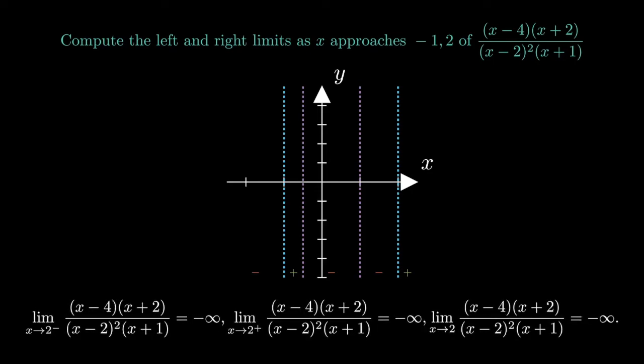At x equals 2, both the left and right limits are negative infinity, so the limit at x equals 2 is negative infinity.